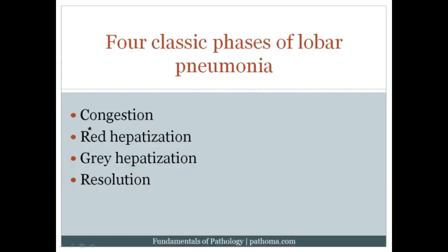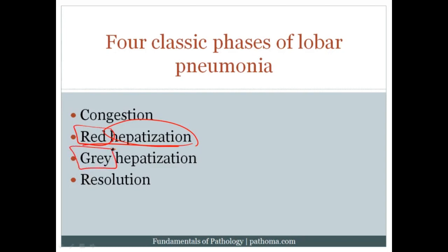When a patient gets lobar pneumonia, there are four classic pathological phases. First is congestion, where blood vessels dilate, increasing blood volume and resulting in edema. Second is red hepatization, where an exudate containing neutrophils and red blood cells fills the alveolar air sacs, giving the normally spongy lung a solid, liver-like consistency — hence the term hepatization. Third is gray hepatization, once the red blood cells are broken down. Fourth is resolution, where the exudate clears and healing begins.